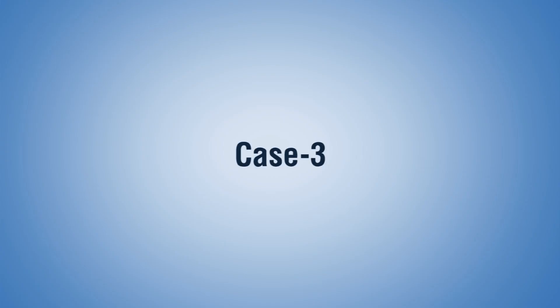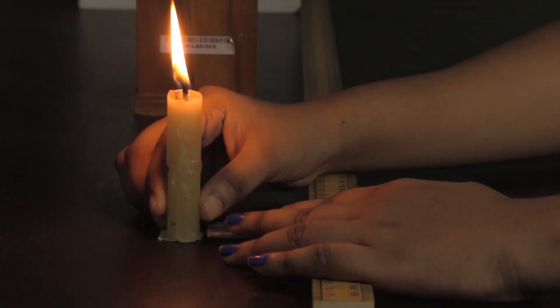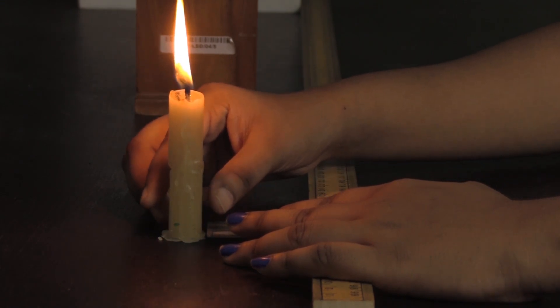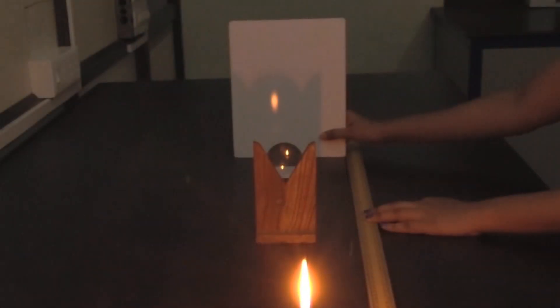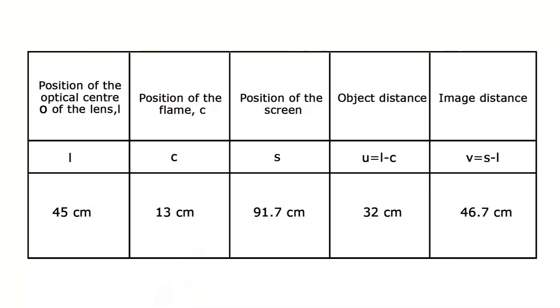Case 3 — Object between F1 and 2F1: Place the candle at a distance between F1 and 2F1 and adjust the position of the screen to obtain a sharp image. Notice that the image will be formed beyond 2F2. A real, inverted, and enlarged image is obtained in this case. Record the observations in the table.